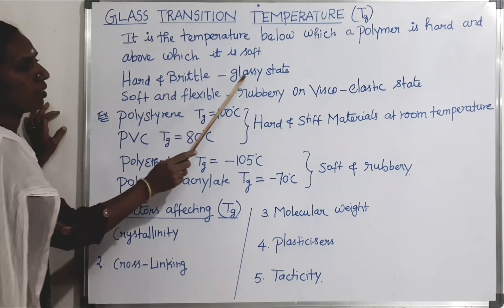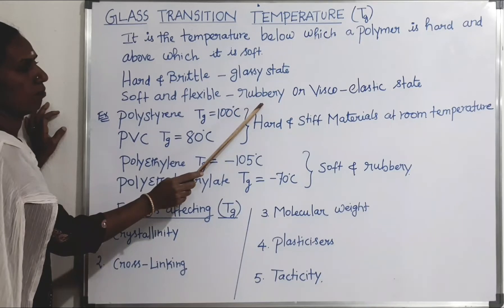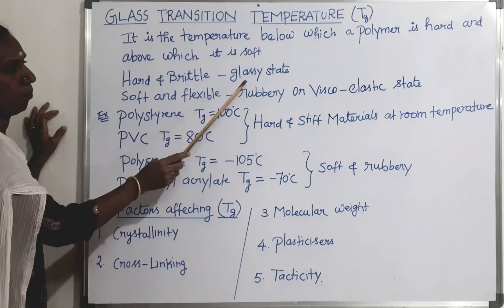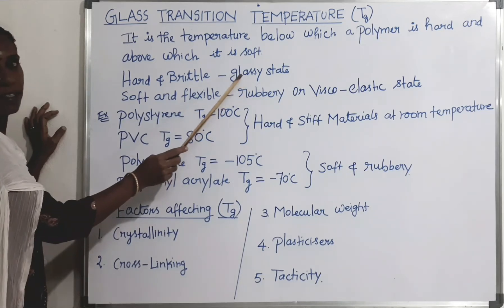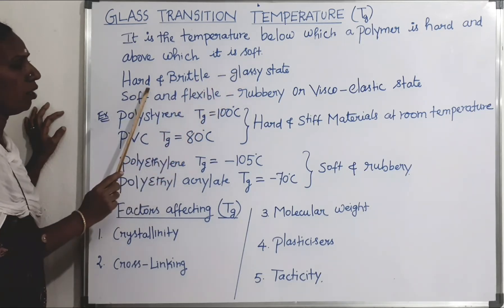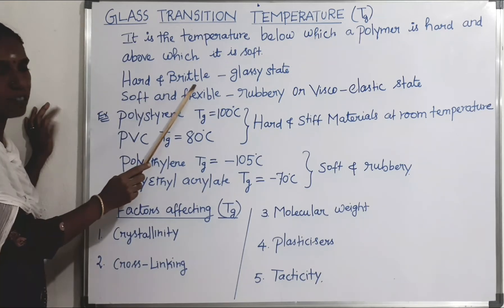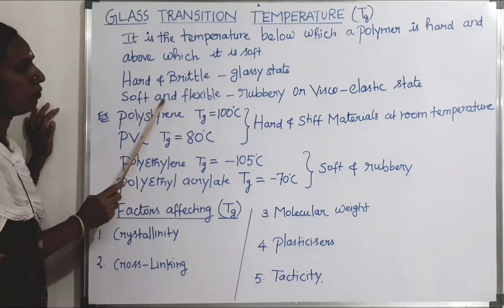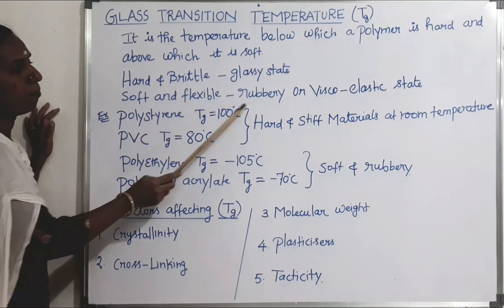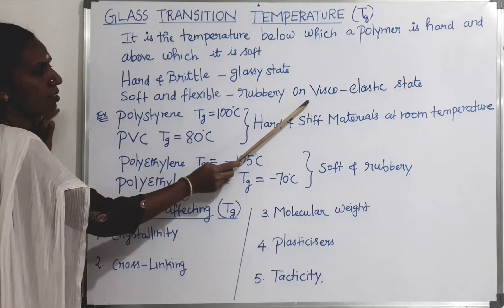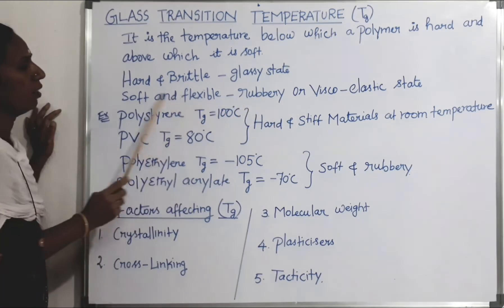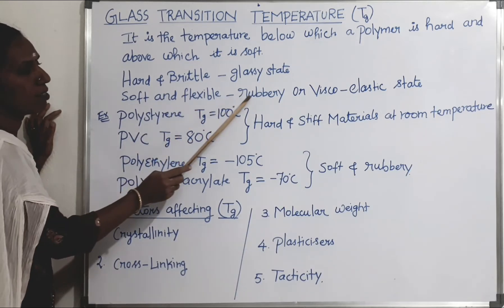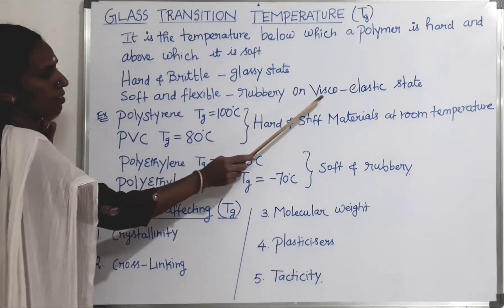So what is the glassy state and rubbery state? If a polymer is hard and brittle, it is in the glassy state — for example, glass, which is normally hard and brittle in nature. If a polymer is soft and flexible, the state is denoted as rubbery or viscoelastic state.